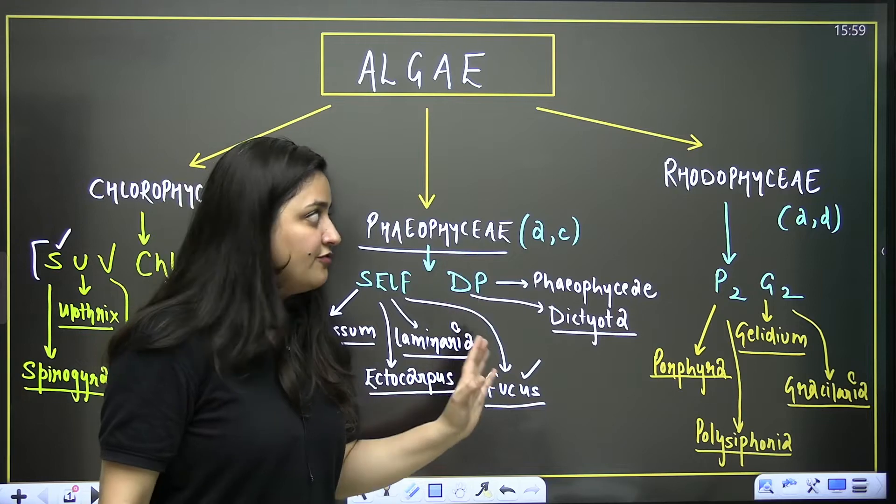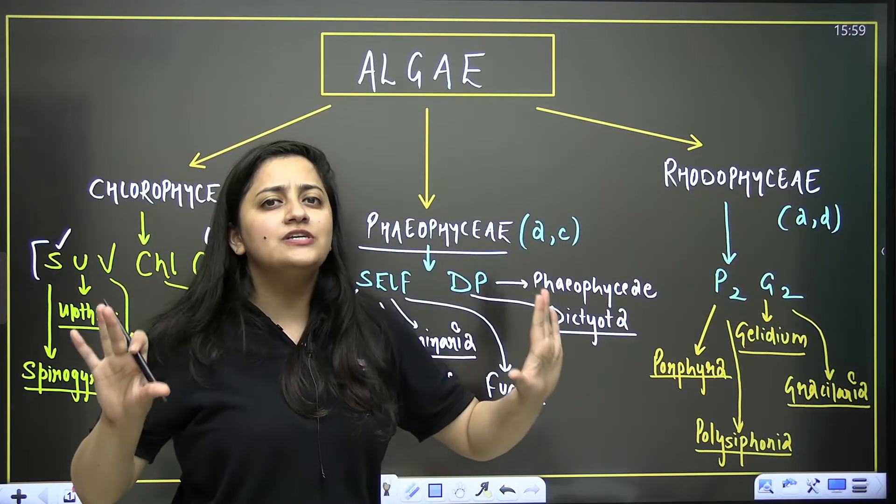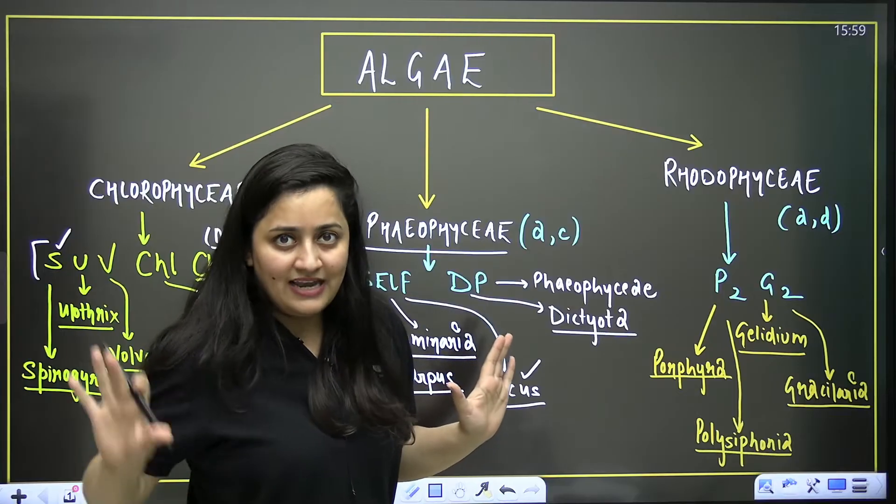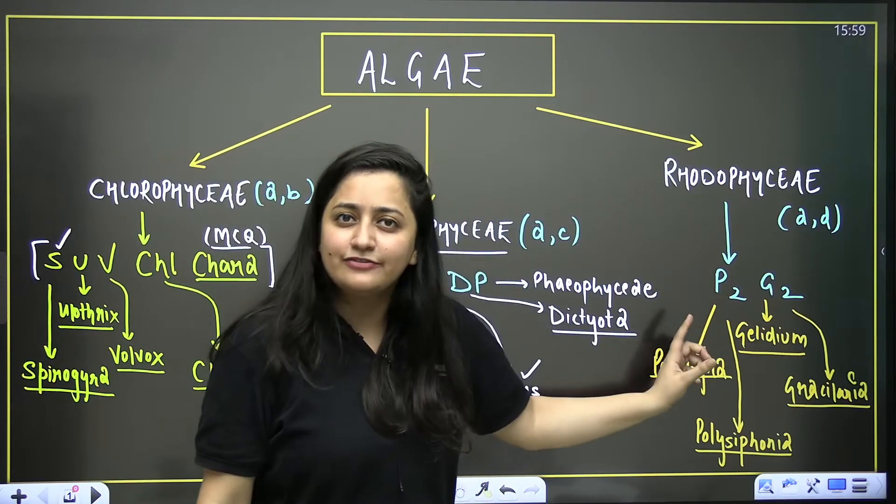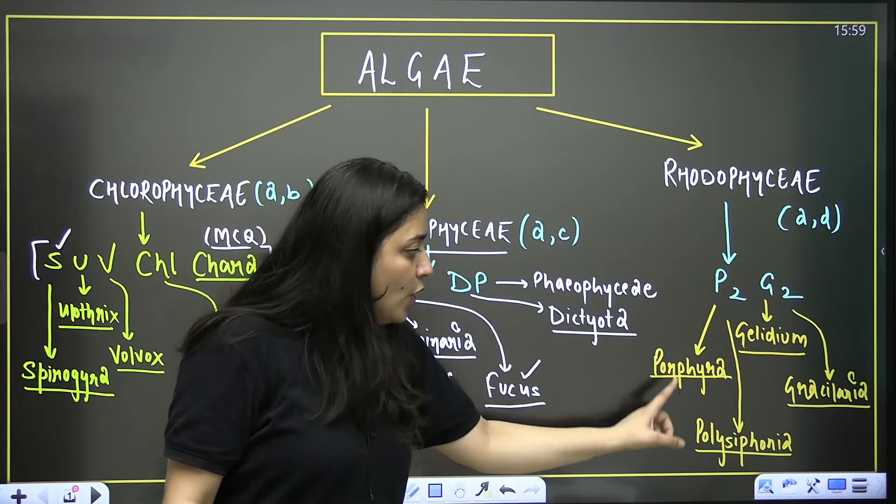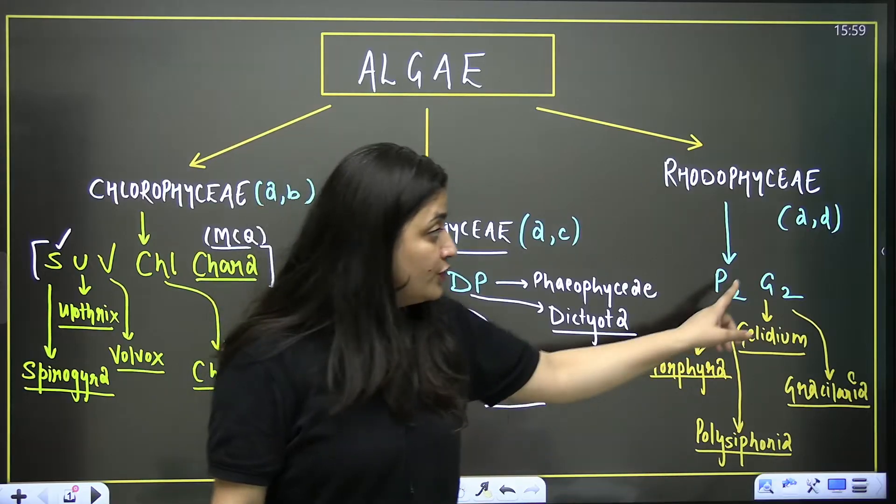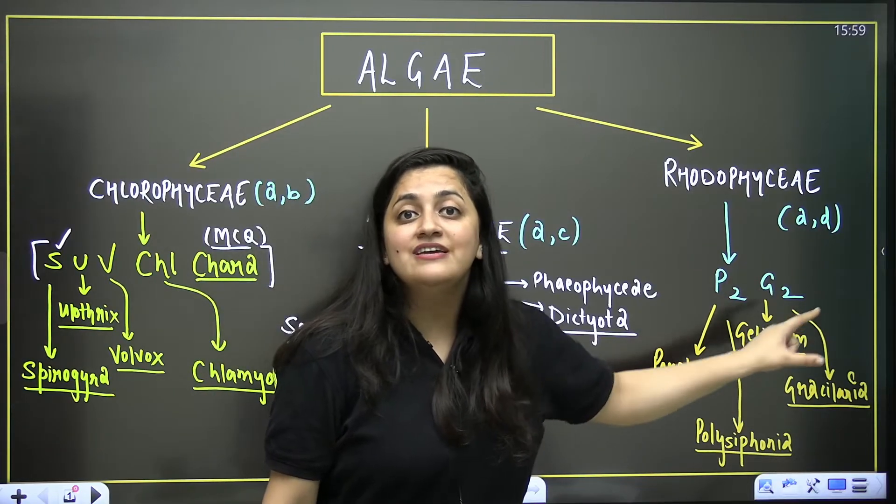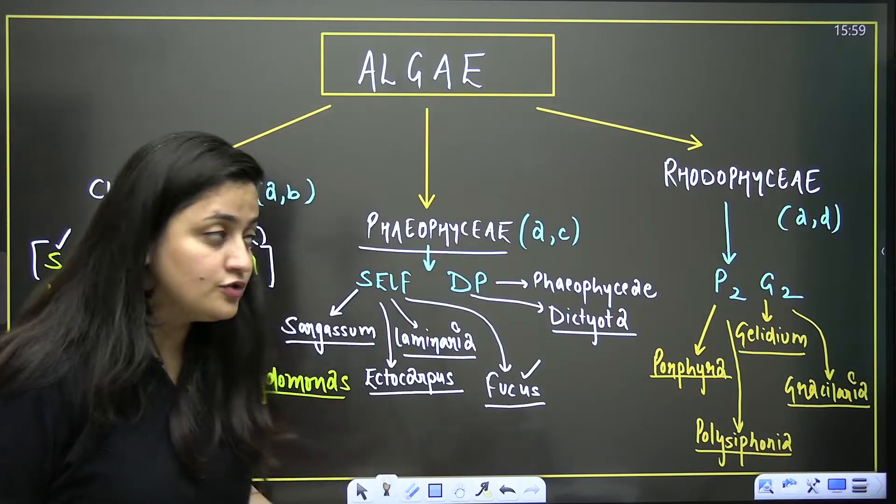Now come to Rhodophyceae, red algae having no motile structure in the life cycle. The trick is P2 G2: Porphyra, Polysiphonia, Gelidium, Gracilaria. These are two algae from where agar is obtained. Porphyra, Laminaria, Sargassum - they all are edible algae.